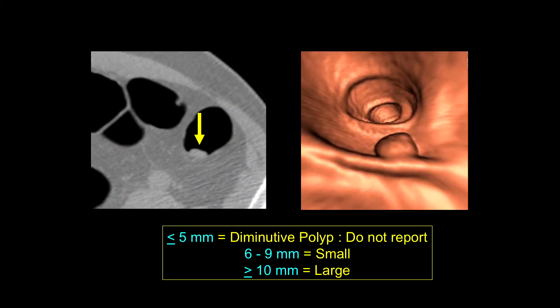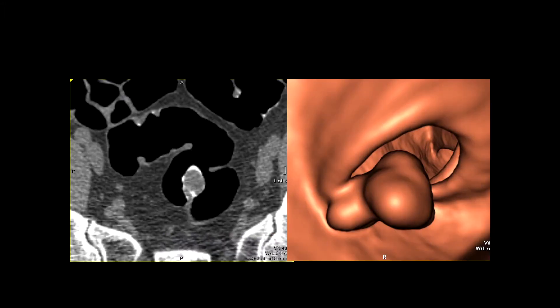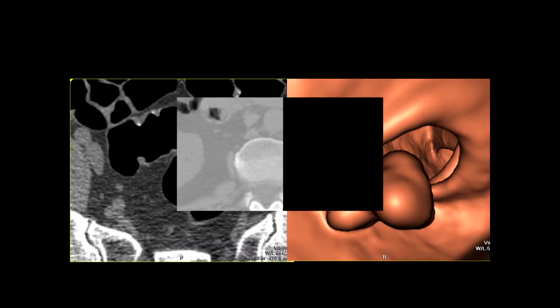The ACR practice guidelines recommend that for diminutive polyps — less than or equal to 5 millimeters — you don't have to report these. 6 to 9 millimeter size lesions are called small polyps, and anything above that is large. Here's just a demonstration of a large pedunculated polyp.